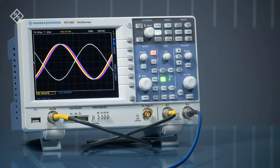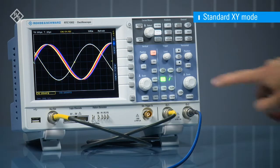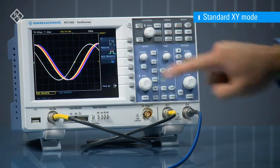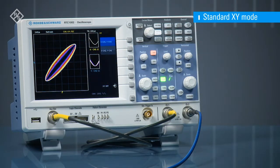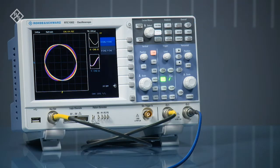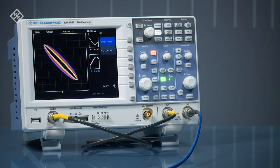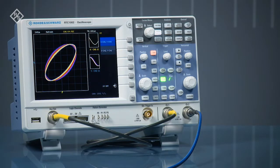RTC 1000 series oscilloscopes feature a standard XY mode. Plotting two signals against each other allows you to view the relationship between them. In this example, a phase shift. In addition, small preview windows let you easily control the settings of your waveforms.